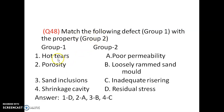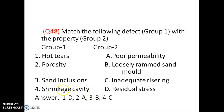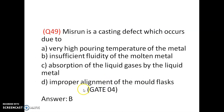Match the following: hot tears, porosity, sand inclusion, and shrinkage cavity. Hot tears occur due to residual stress (1). Porosity occurs due to poor permeability (2A). Sand inclusions occur due to loosely rammed sand mold (3B). Shrinkage cavity occurs due to inadequate risering (4C). Misrun is a casting defect which occurs due to insufficient fluidity of the molten metal — option B is correct.